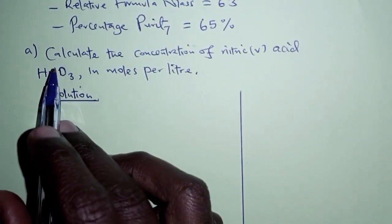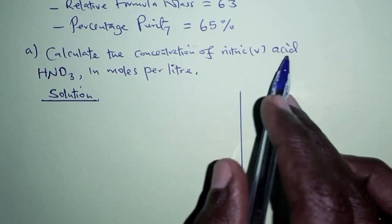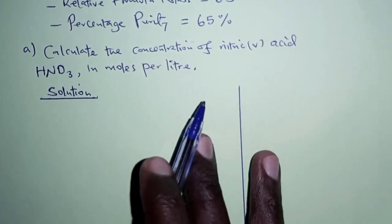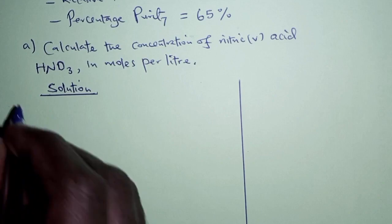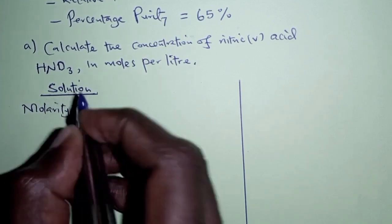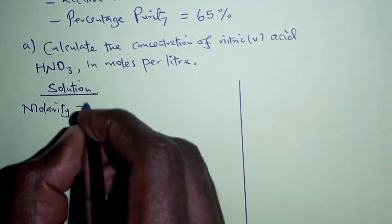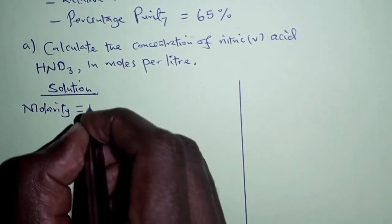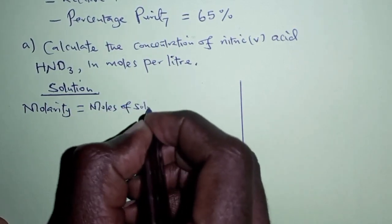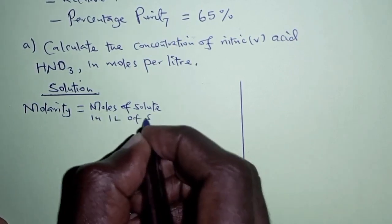For part A, we are required to calculate the concentration of nitric acid in moles per liter. In other words, we are required to determine the molarity. Molarity refers to the number of moles of the solute in one liter of solution.